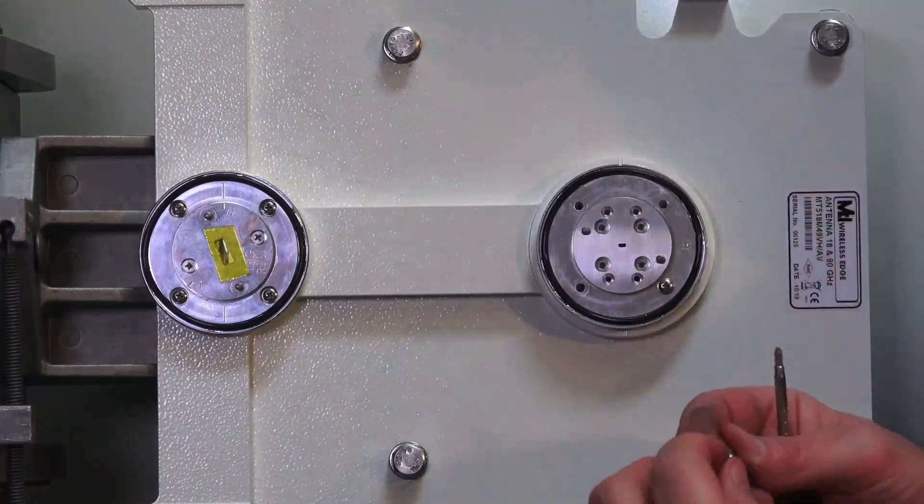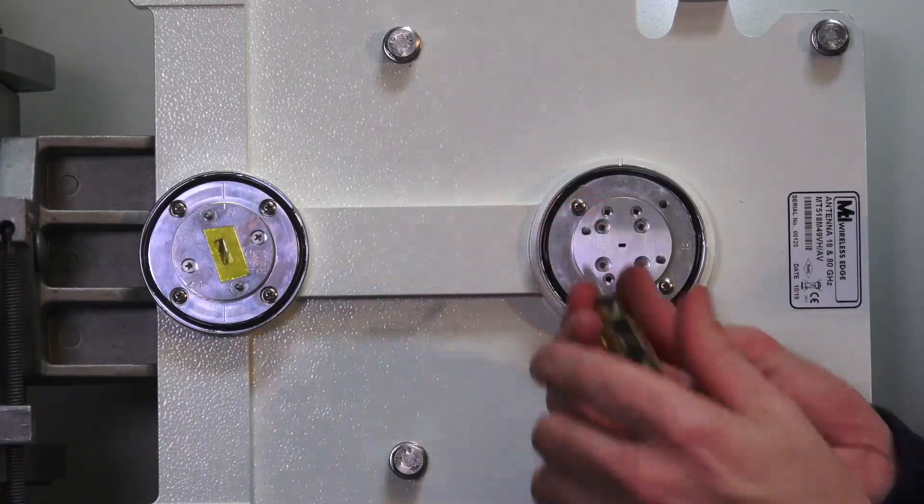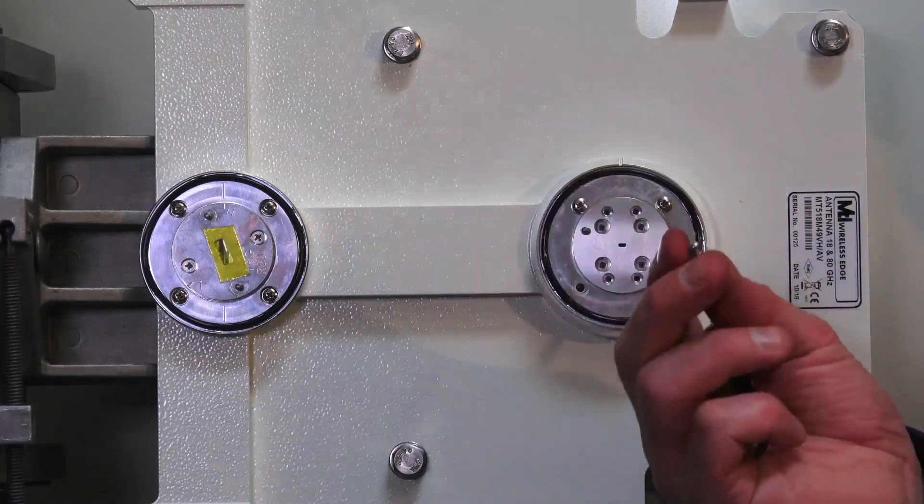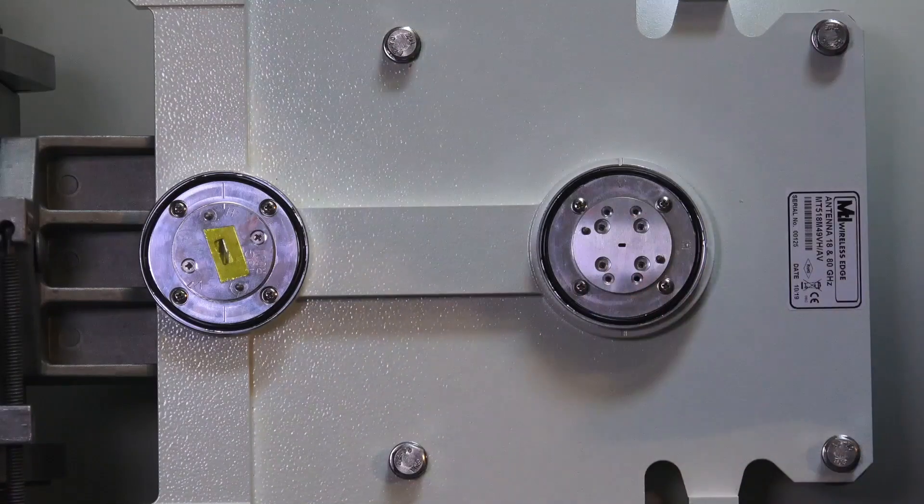We'll put our screws back in. And these screws are different sizes. The outer screws are the larger ones, so make sure you get the right screws in the right hole. On each one of these screws, there's a lock washer and a flat washer. Four outer screws, now do the four inner screws.